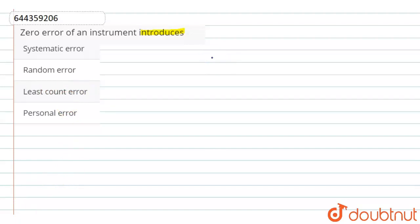Zero error means the error which has relation with the zero mark on the scale of the measuring instrument.